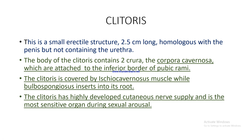The clitoris is a small erectile structure, 2.5 cm long, homologous with the penis but not containing the urethra. The body of the clitoris contains two crura — the corpora cavernosa — which are attached to the inferior border of the pubic rami. The clitoris is covered by the ischiocavernosus muscle, while the bulbospongiosus inserts into its root. The clitoris has a highly developed cutaneous nerve supply and is the most sensitive organ during sexual arousal.